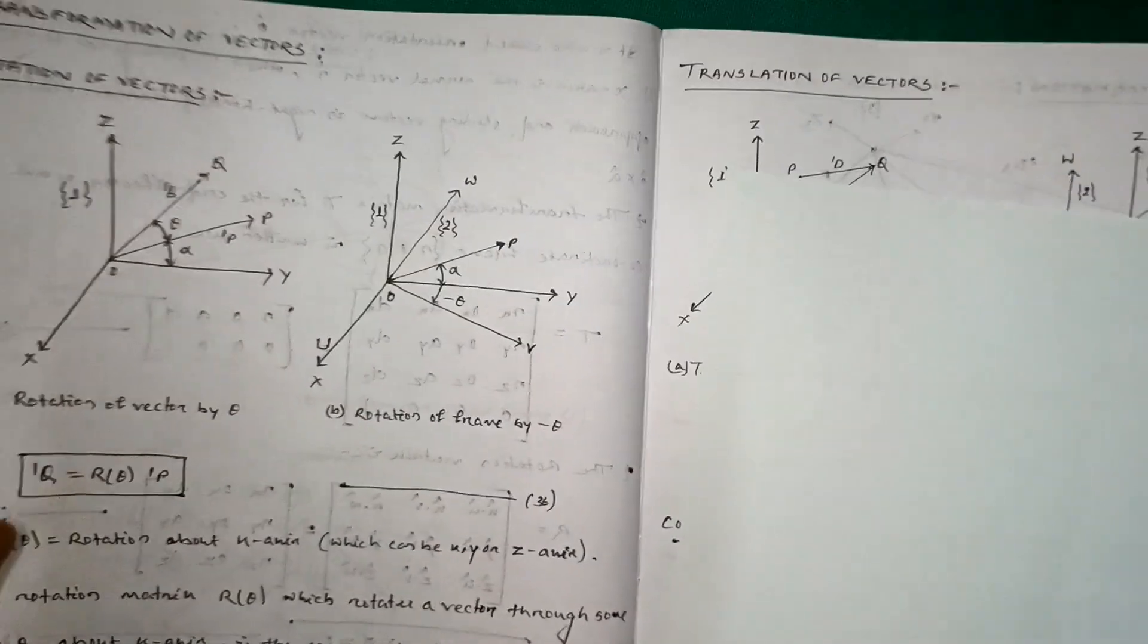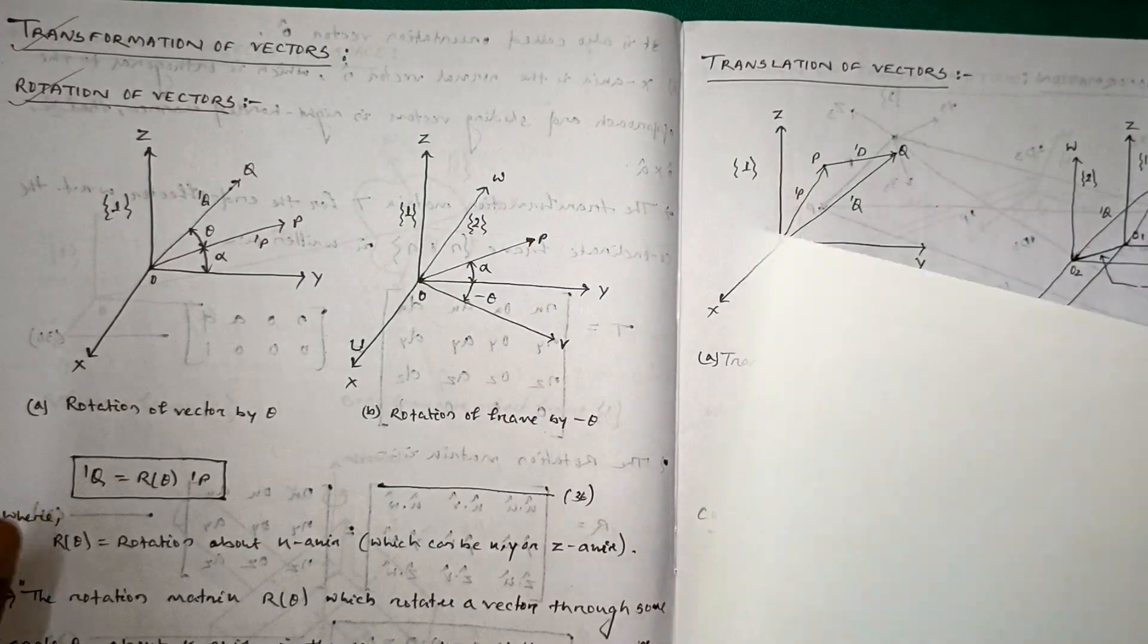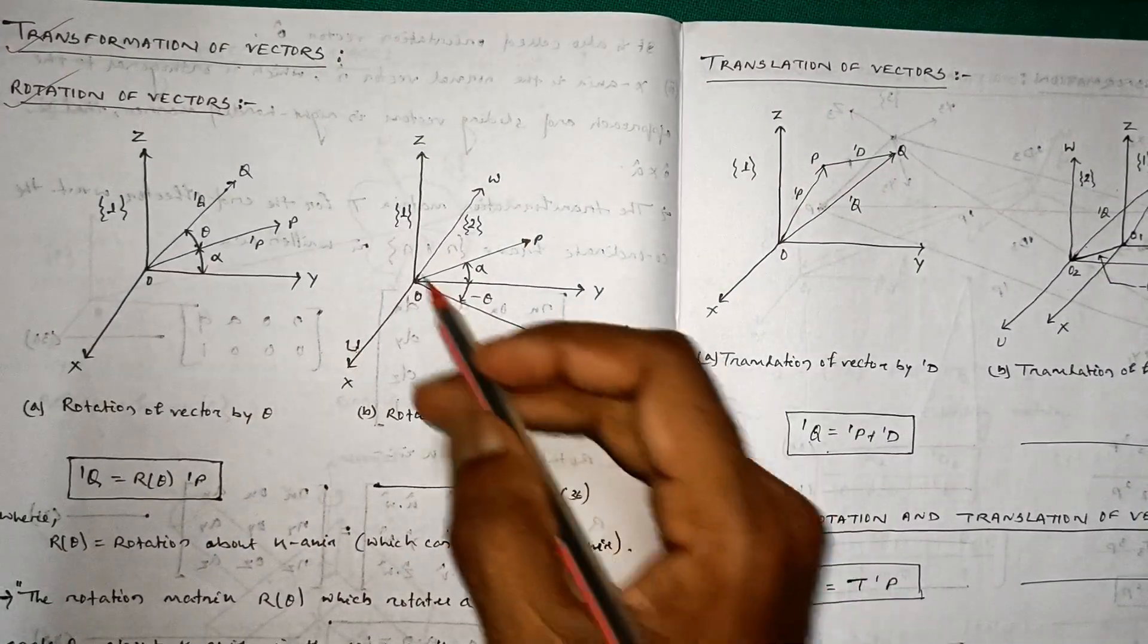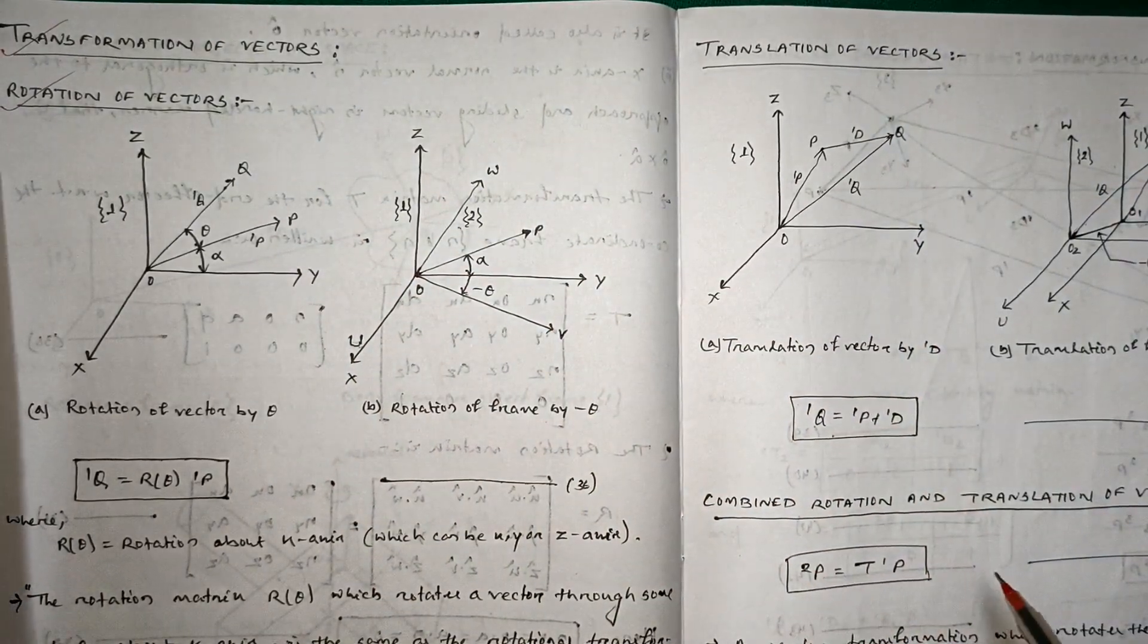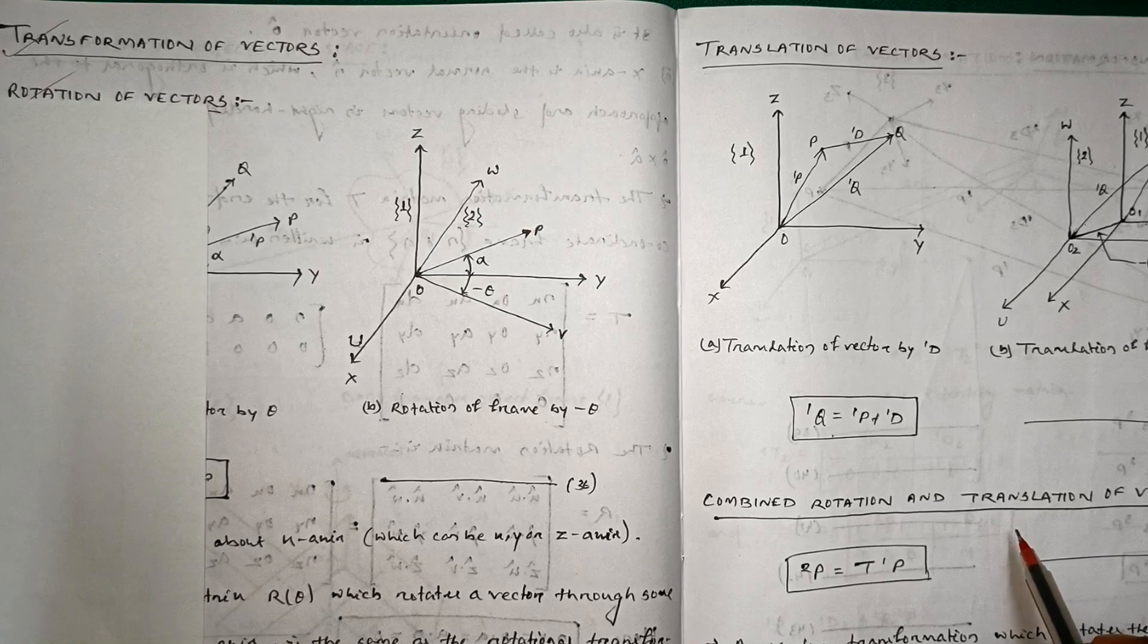This is all about transformation of vectors which consists of three things: rotation of vectors, translation of vectors, and combination of both. Thank you.